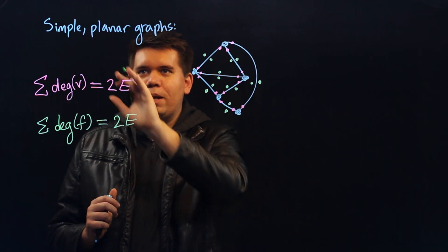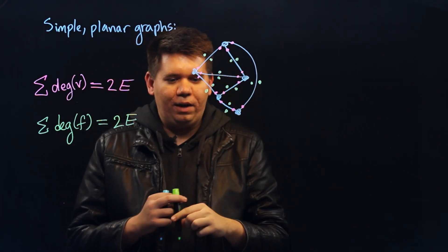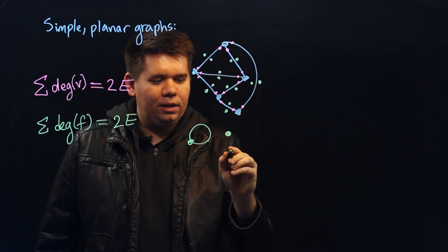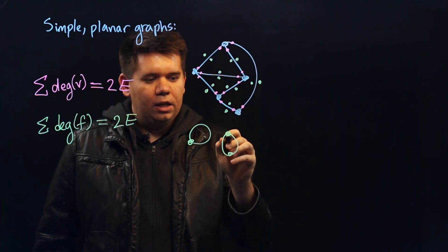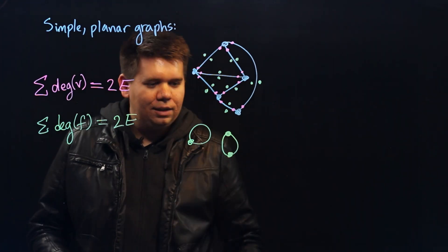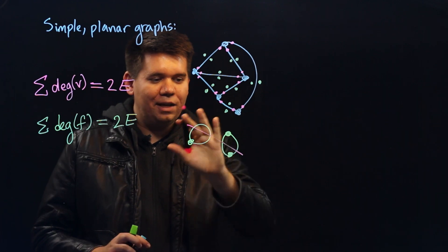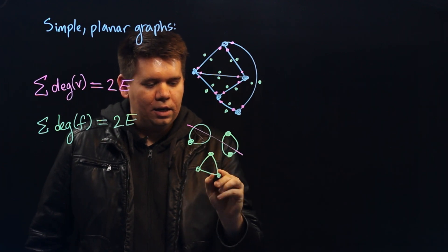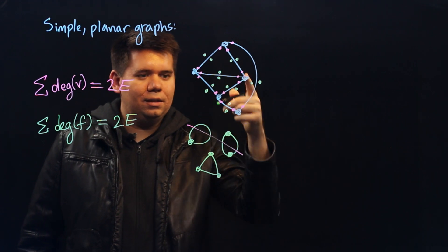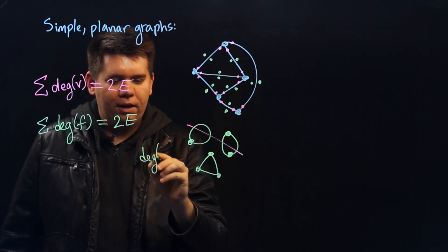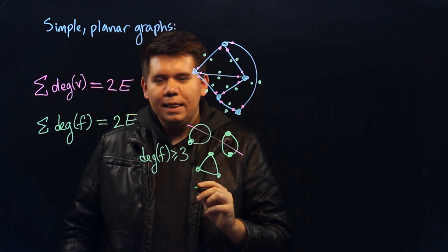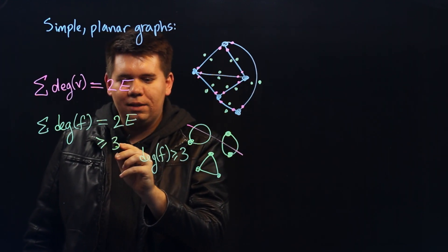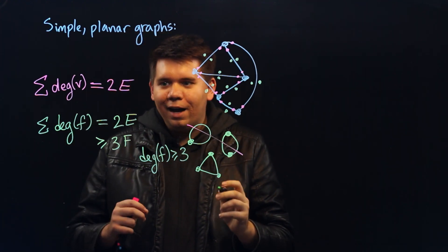Now there's one more thing we can say about simple planar graphs: whenever we have a face, we're not going to have a face with just one edge, because that would be a loop. And we're not going to have a face with two edges, because that would be multiple edges between two vertices. So neither of these can happen in a simple planar graph — these are not simple. Instead, the fewest number of edges that we can have in any face is going to be three. So we know that for any given face in a simple planar graph, the degree of that face must be at least three. That means when we sum up the degree of the faces, each face will have at least three, so the sum will be at least three times the number of faces.